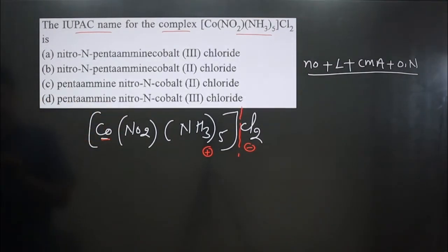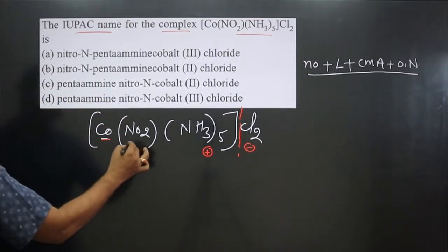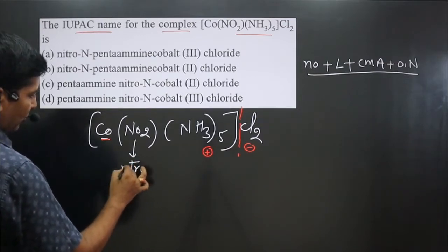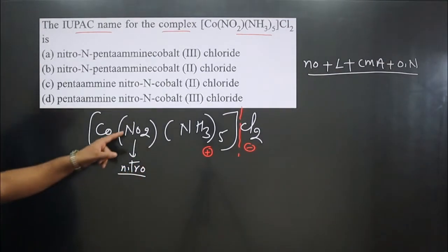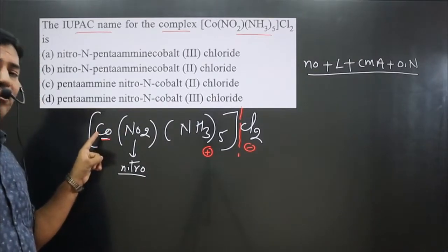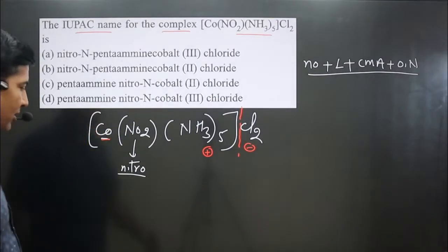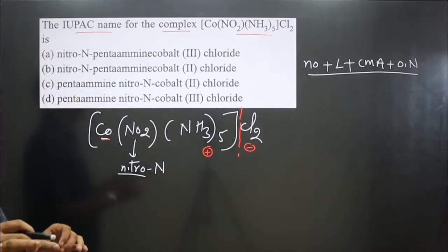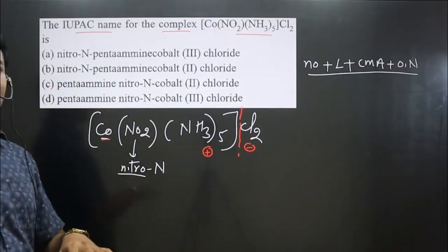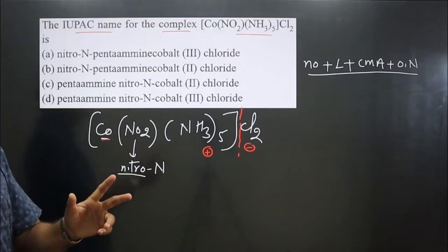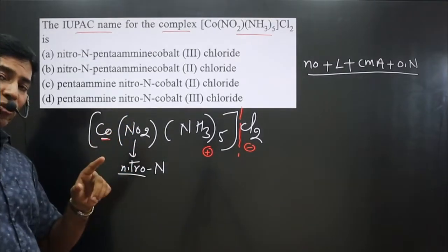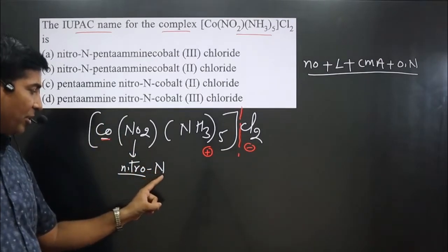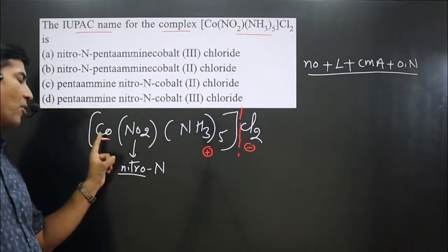First, name the ligands. Pay attention carefully — this is NO2, which is nitro, starting from N. Since nitrogen is forming a bond with the central metal atom, we mention nitro-N specifically. This indicates that nitrogen is forming the bond, because this is an ambidentate ligand — it has more than one donor site. Oxygen also has a donor site and nitrogen also has a donor site, so we specifically mention the element forming the bond.